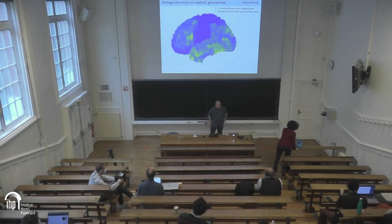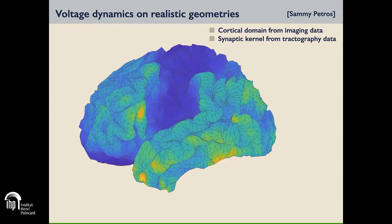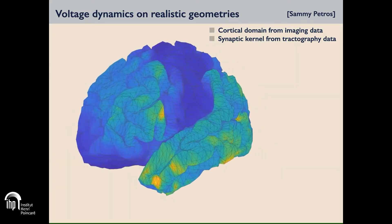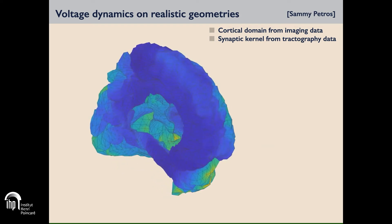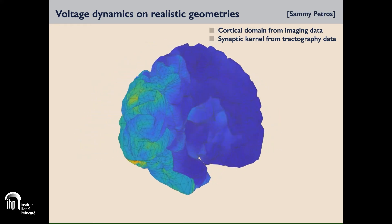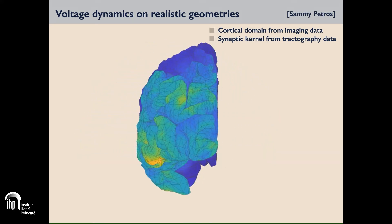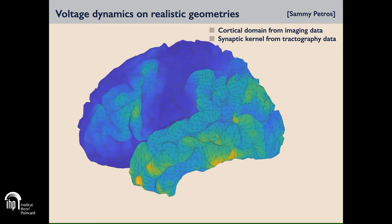What I want to discuss in today's talk is the foundation of certain numerical and analytical tools to describe the approximate solutions of neurobiological networks that are solutions to spatially extended models that are non-local. This is an example from a former PhD student of mine, Sammy Petros. He's simulating the voltage dynamics on a surface whose triangulation has been lifted from imaging data and applying synaptic kernel strengths that are also taken from tractography data.